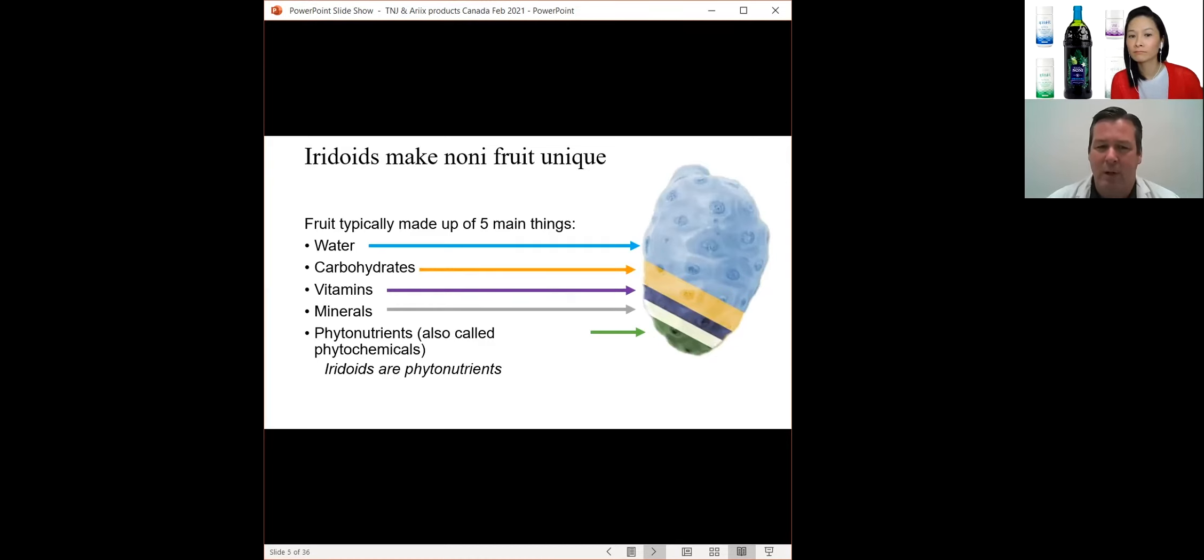So these things are vitamins and minerals you need to stay alive. And then there are a group of other substances that are not vitamins or minerals or these macronutrients. They're called phytonutrients. Some people call them phytochemicals. But iridoids are phytonutrients.